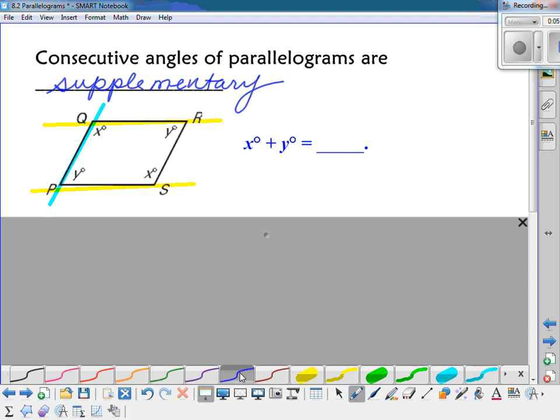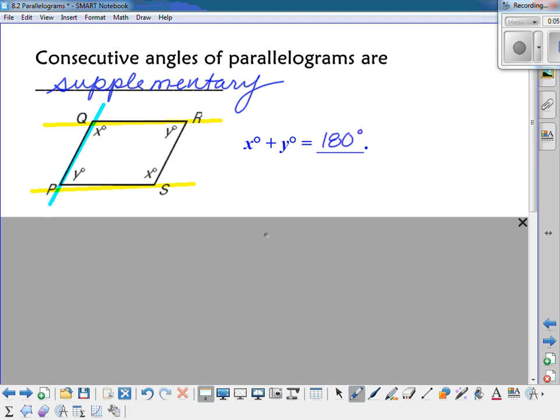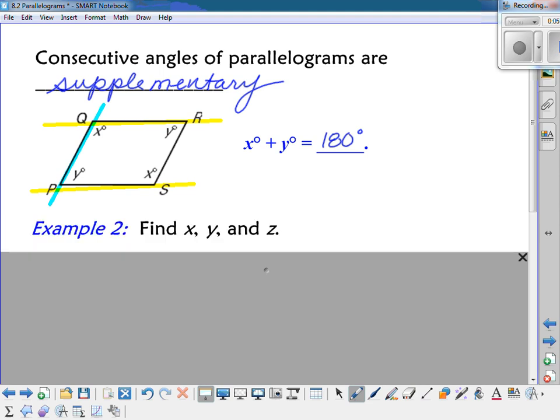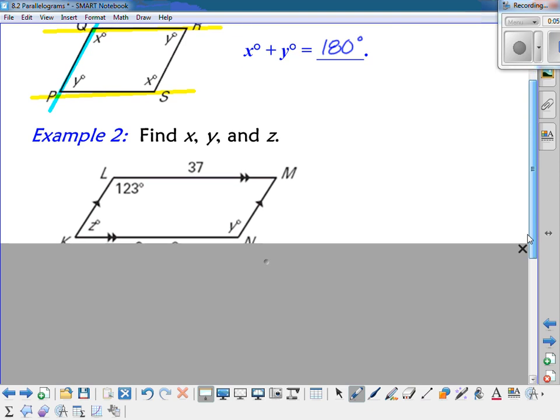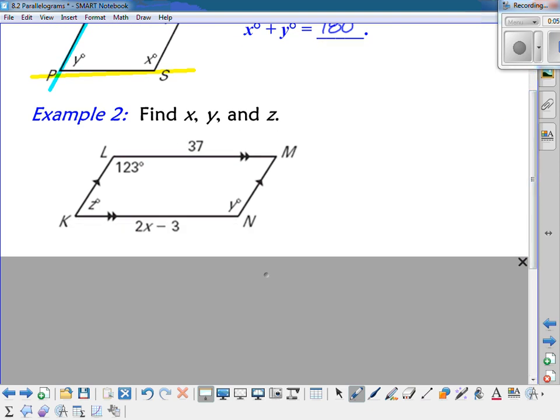Which means they add up to 180 degrees. And the same would be true if I was going across, going horizontally or going vertically. Whenever they are right next to each other, consecutive, they are supplementary. Alright, so we can use this property to solve another problem.